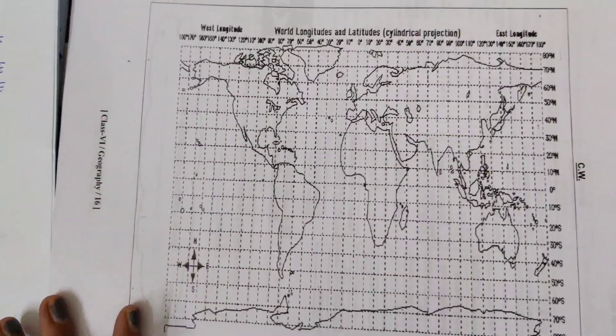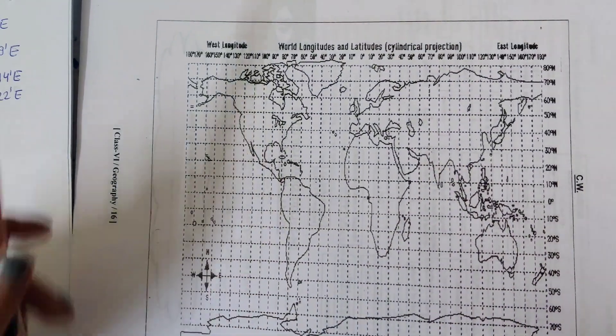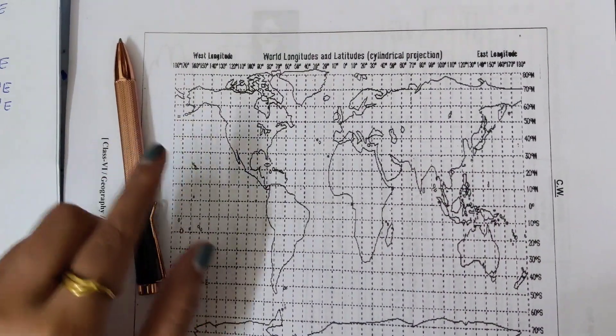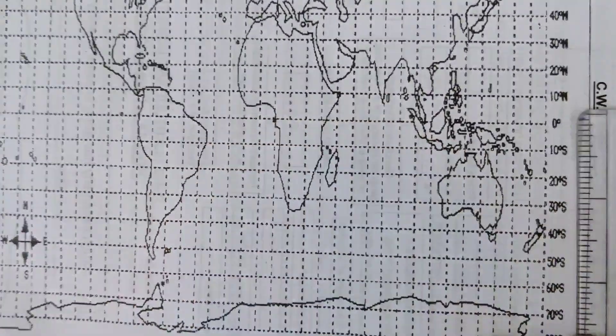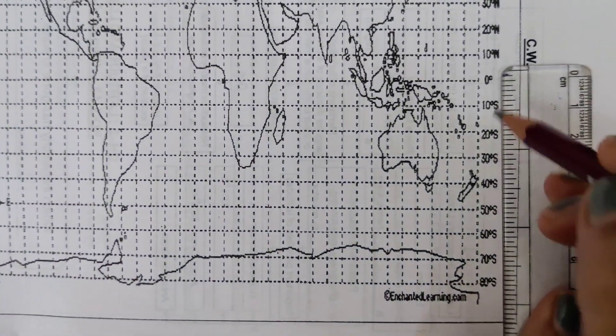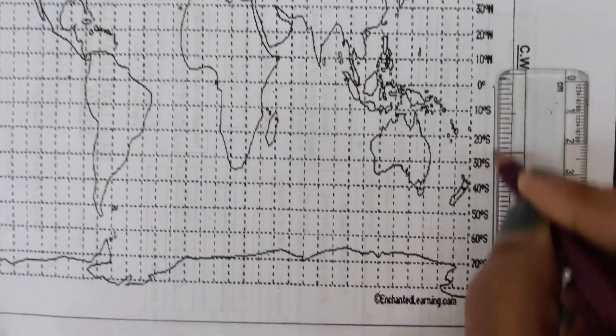Let's see how to mark. One basic thing which is very important: this part from zero in the downward direction is south.